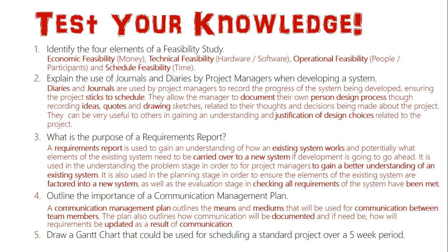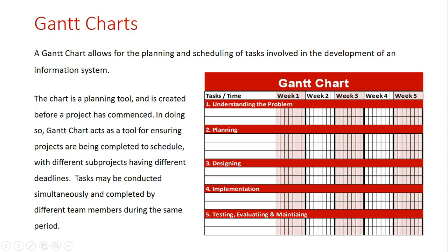The final question: draw a Gantt chart that could be used for scheduling a standard project over a five-week period. What we need to remember is to put in our number of weeks as columns — week one, week two, week three, week four, and week five as the question outlines. Going down the rows, we include the different stages of the system development lifecycle.